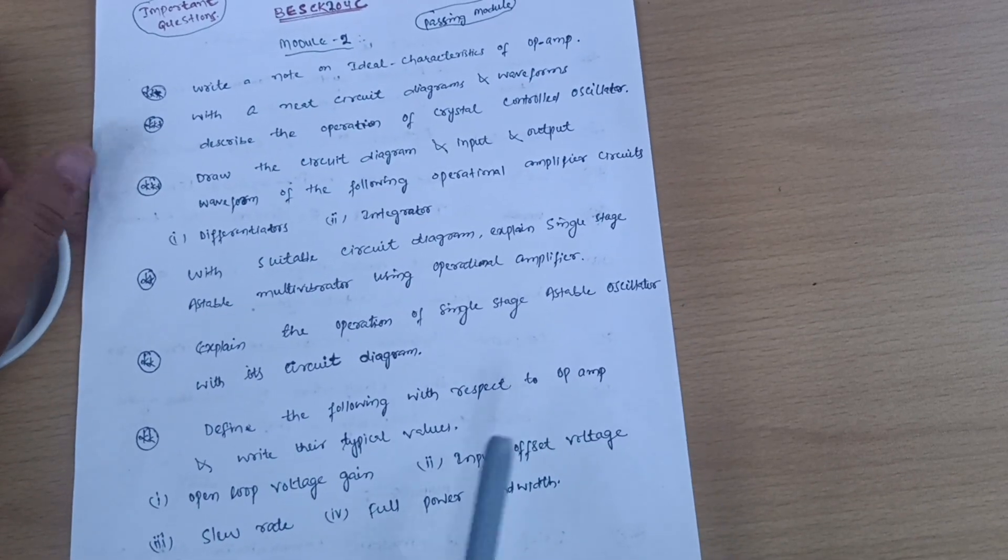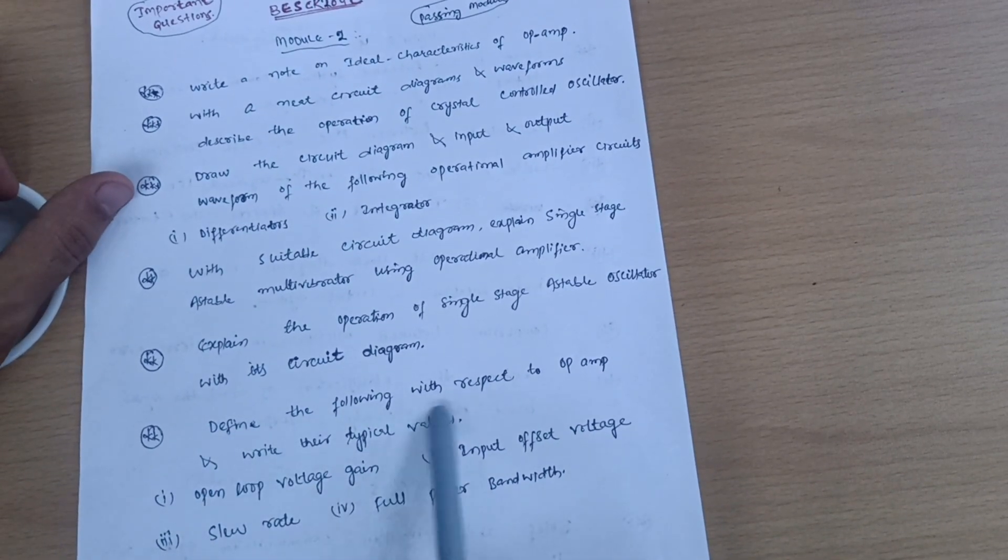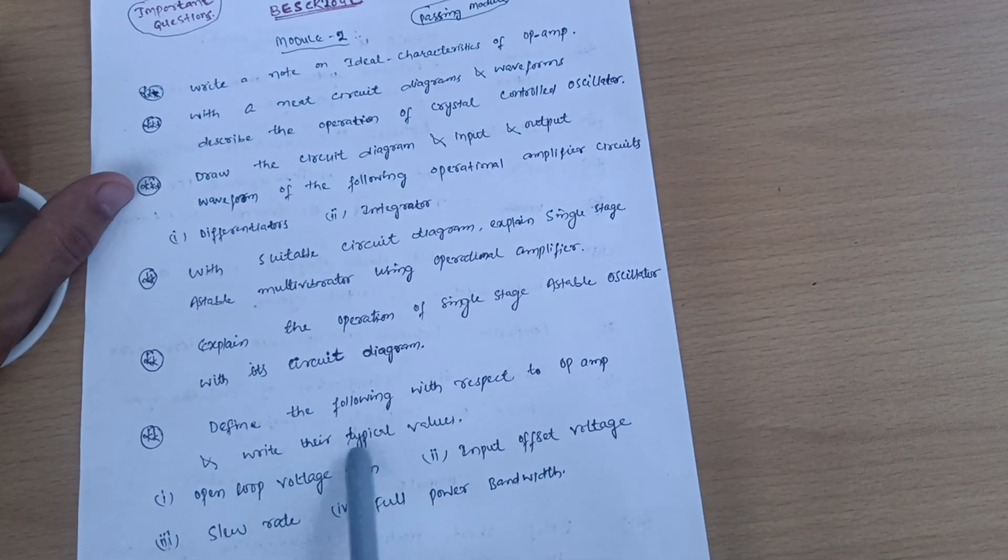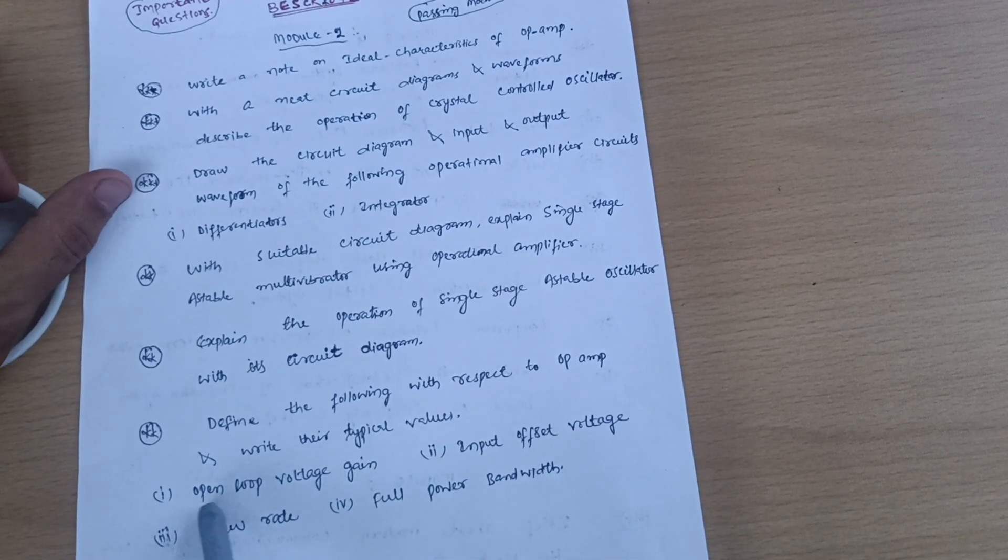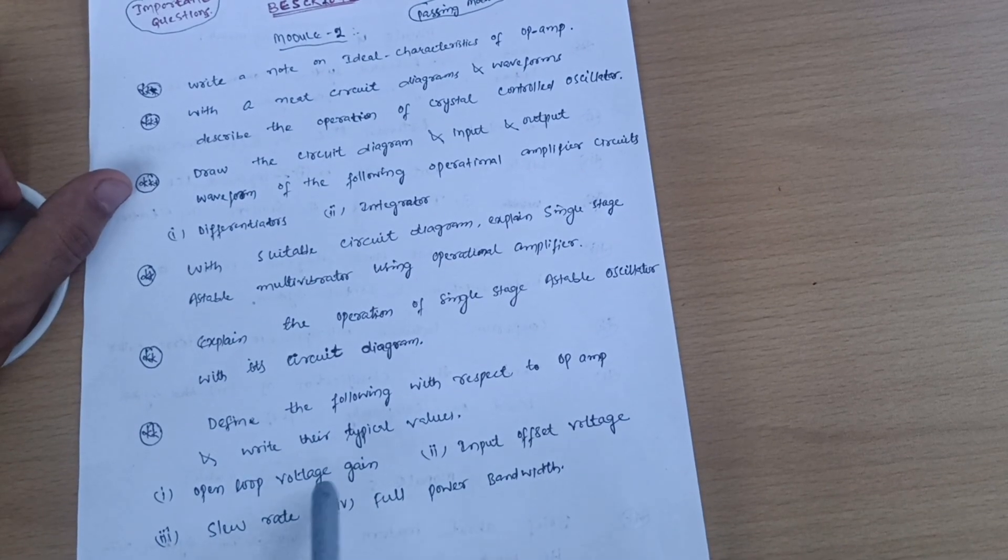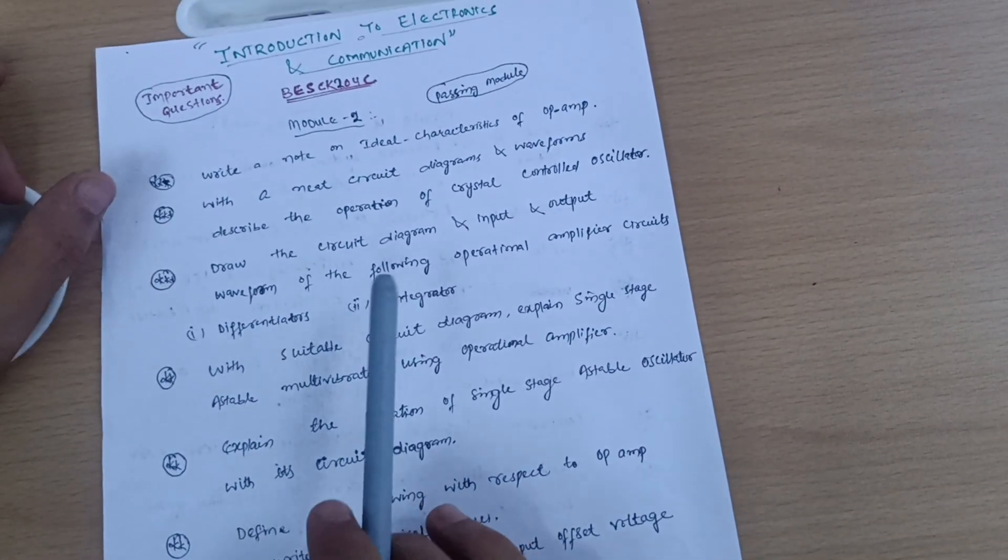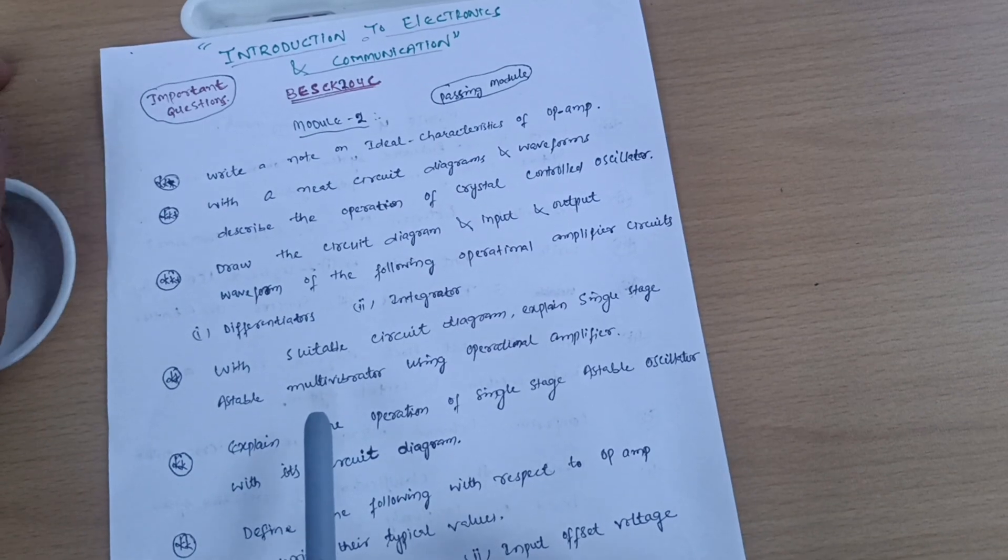Next possibility may be definitions - simpler ones like define the following with respect to op-amp and write their typical values: open loop voltage gain, input offset voltage, slew rate, and full power bandwidth. These are definitions which you have to go through.